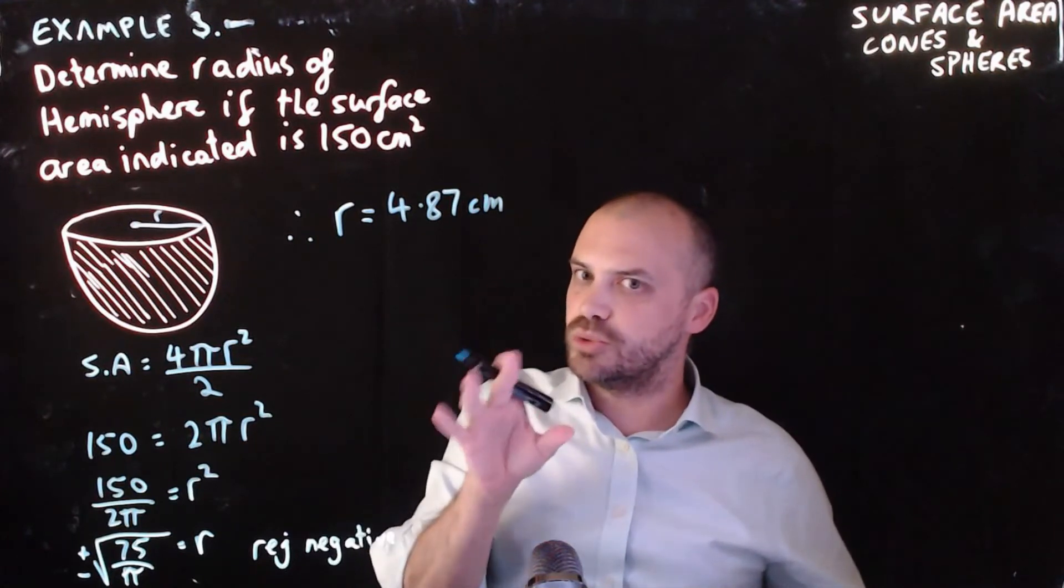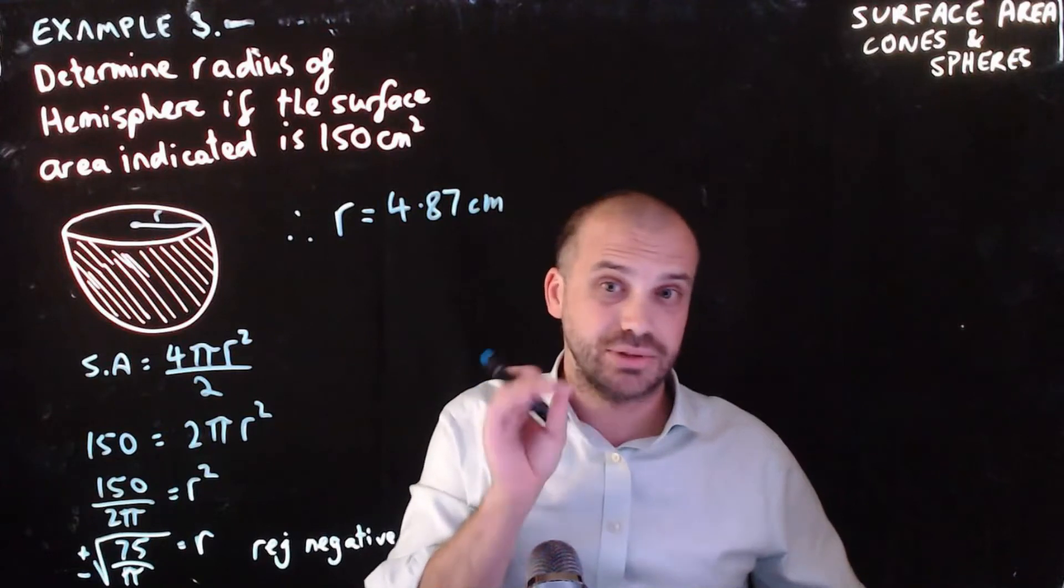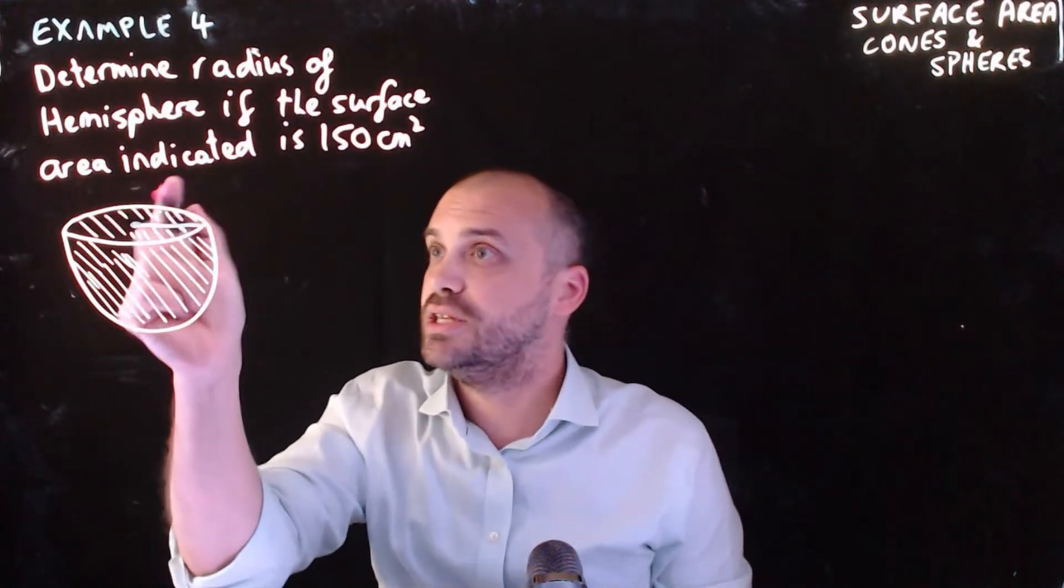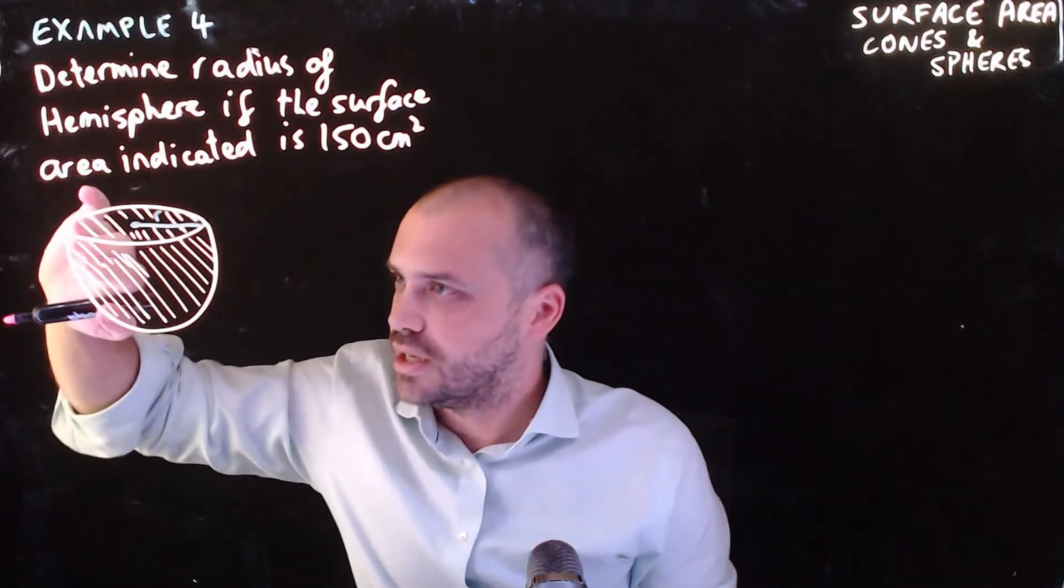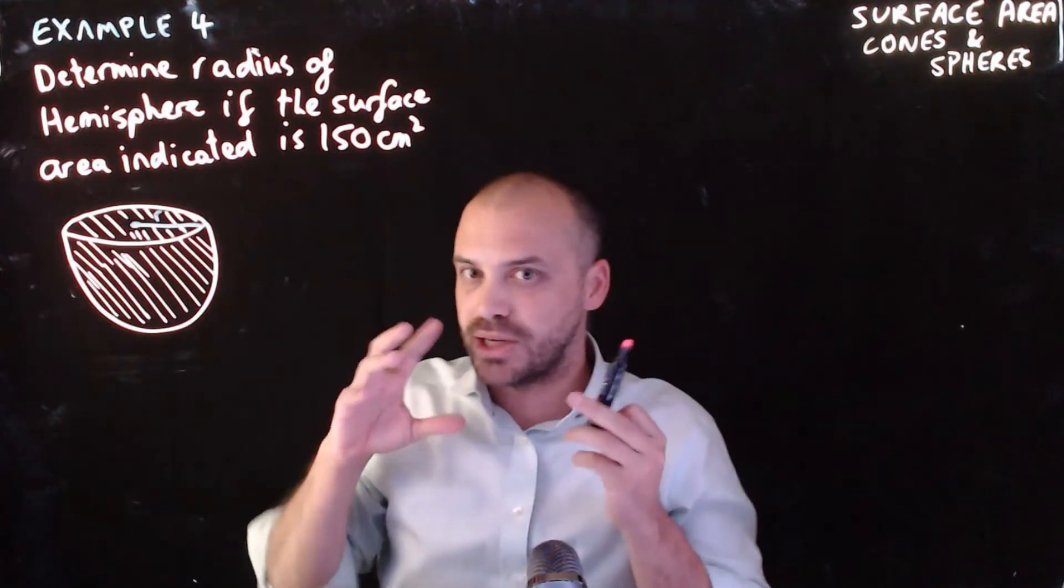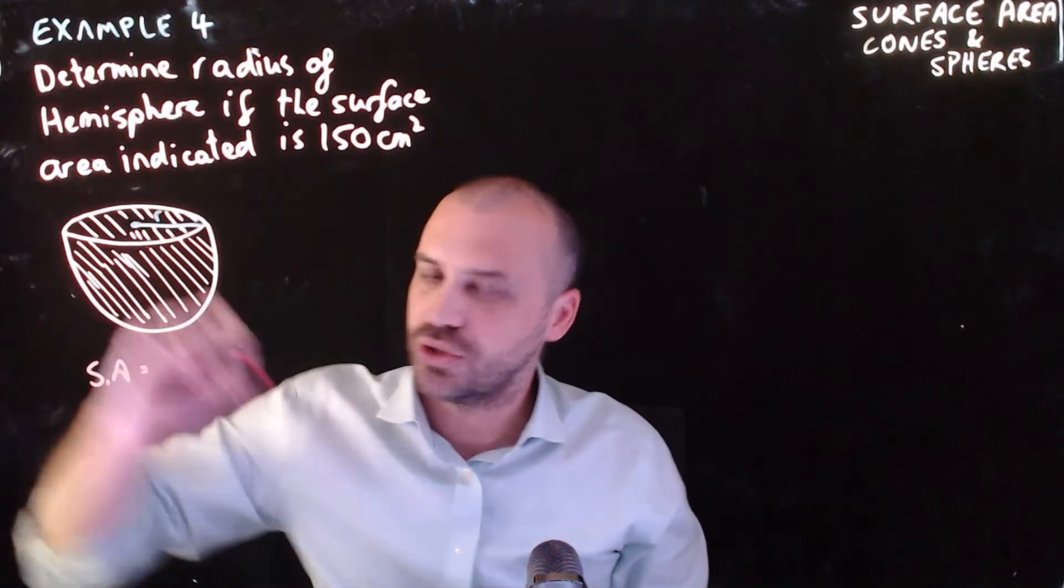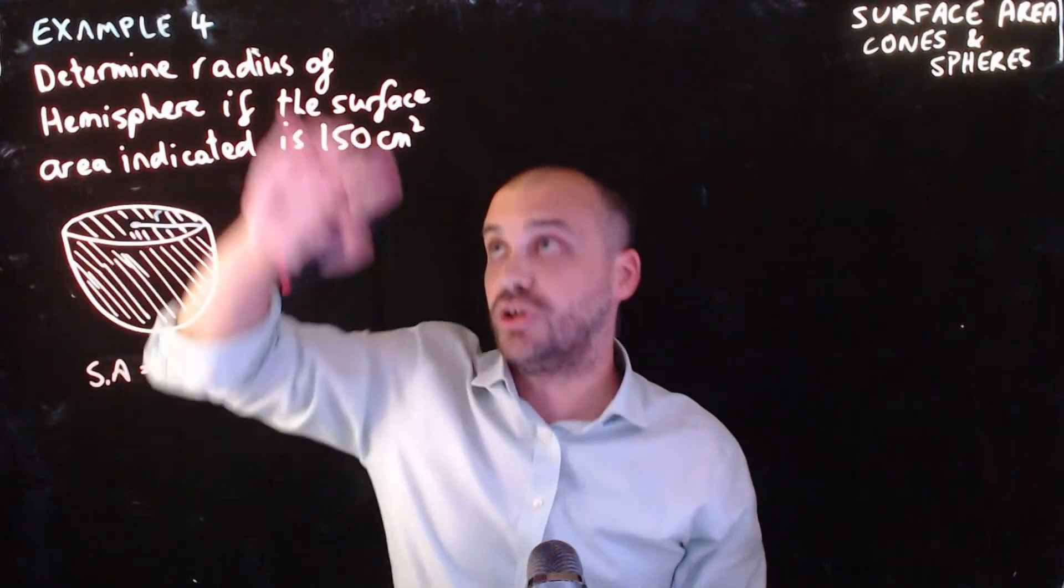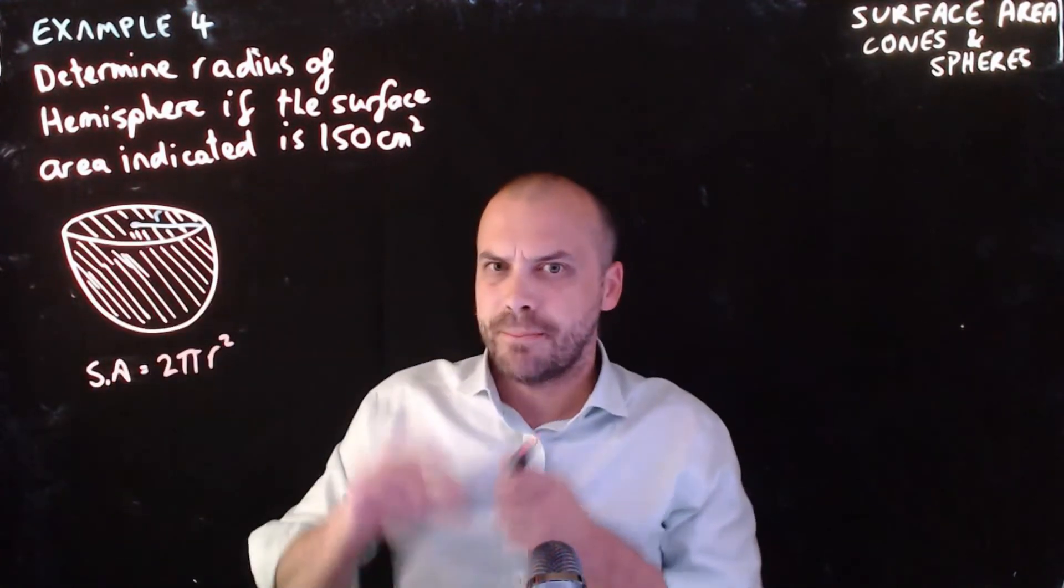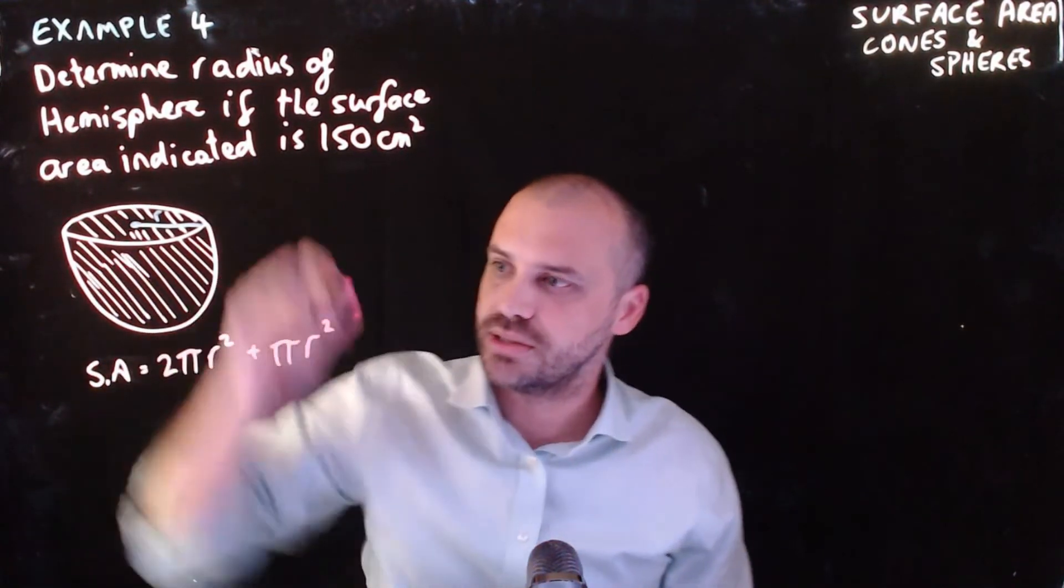Now, I did say that the question would be more difficult if we had to consider that maybe this is shaded in. So let's have a crack at something that looks more difficult than this. So this is not the same question. The question has changed. This is example 4 now. Determine the radius of the hemisphere if the surface area indicated is 150 centimetres squared. And this time, the surface area indicated is the curved bit around the bottom of this bowl. But the bowl also has a lid. So we need to reconsider what the formula for the surface area of this thing is. Let's consider the curved part first. We know that the surface area of the curved part is going to be 4 pi r squared because that's the surface area of a whole sphere and then divided by 2. So that's 2 pi r squared. So that's the curvy bit. But there's a circle here as well. And we know that the area of a circle is pi r squared. So that's going to give us plus pi r squared there.